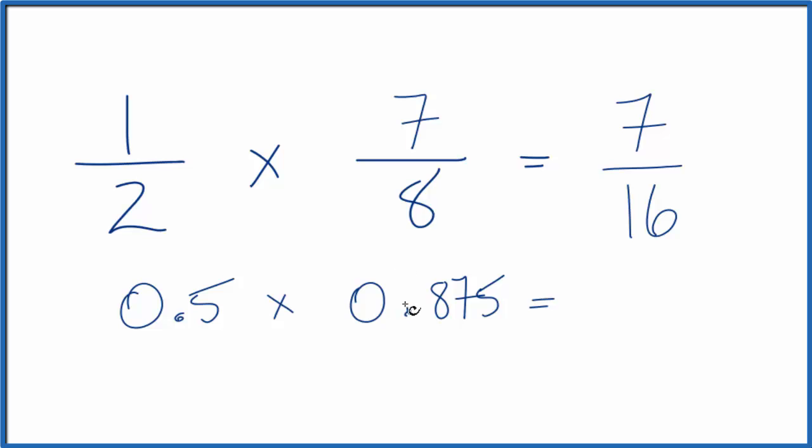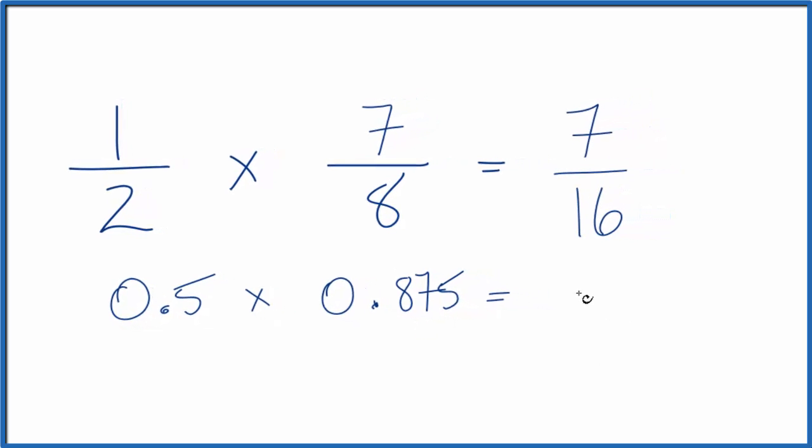And if you multiply these two numbers together, you end up with 0.4375. If you would divide 7 by 16, you would end up with the fraction 0.4375.